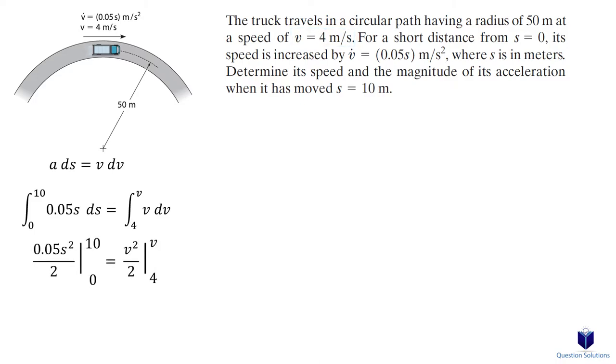Let's solve the integral. Now we can find the normal acceleration using this equation. We just found the velocity, and from the question, we know the circular path has a radius of 50 meters. So let's plug those values in.